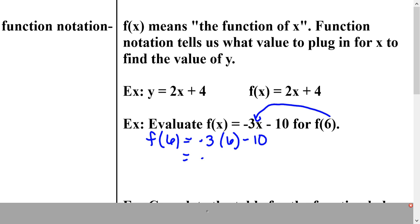So -3 times 6 would be -18, and then minus 10, which would equal -28. So if I use 6 as my input, f(6) would equal -28 as the output.